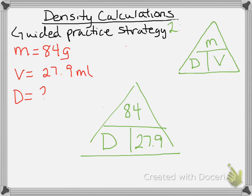And so that's what you do. You simply put 84 divided by, that's what this line right here means, 27.9, which again gives you 3.01 grams per milliliters. So it's going to get you the same answer, it's just a little bit different way of looking at it.